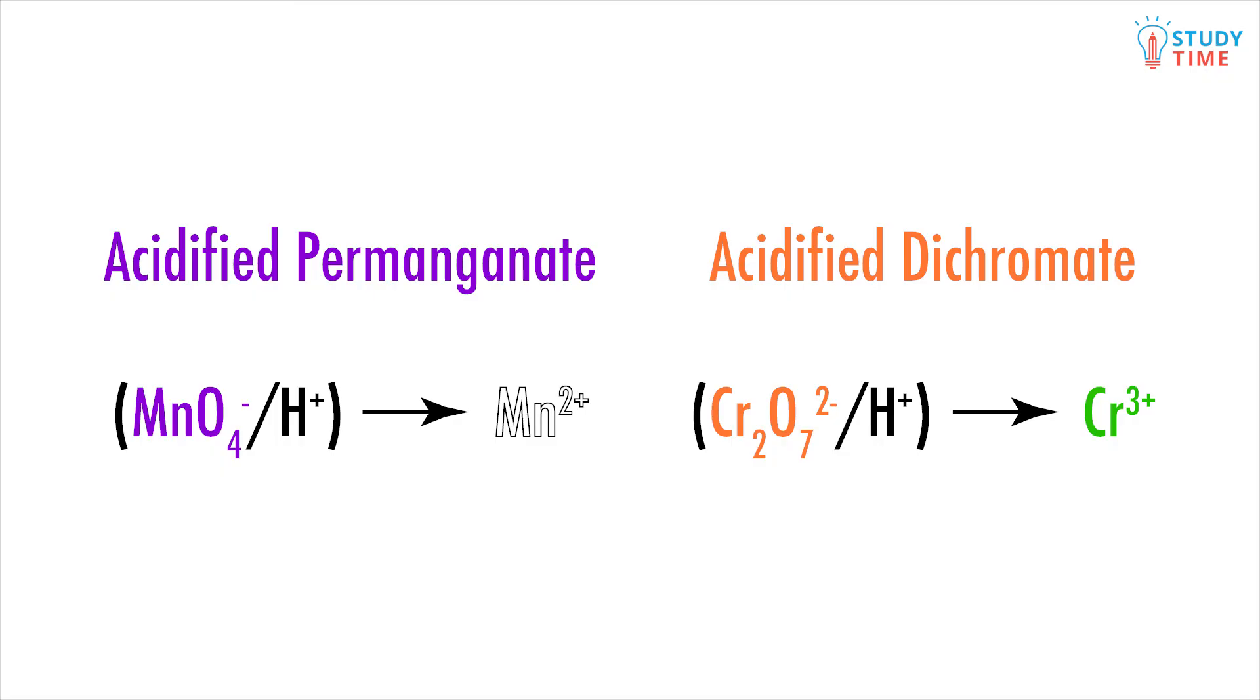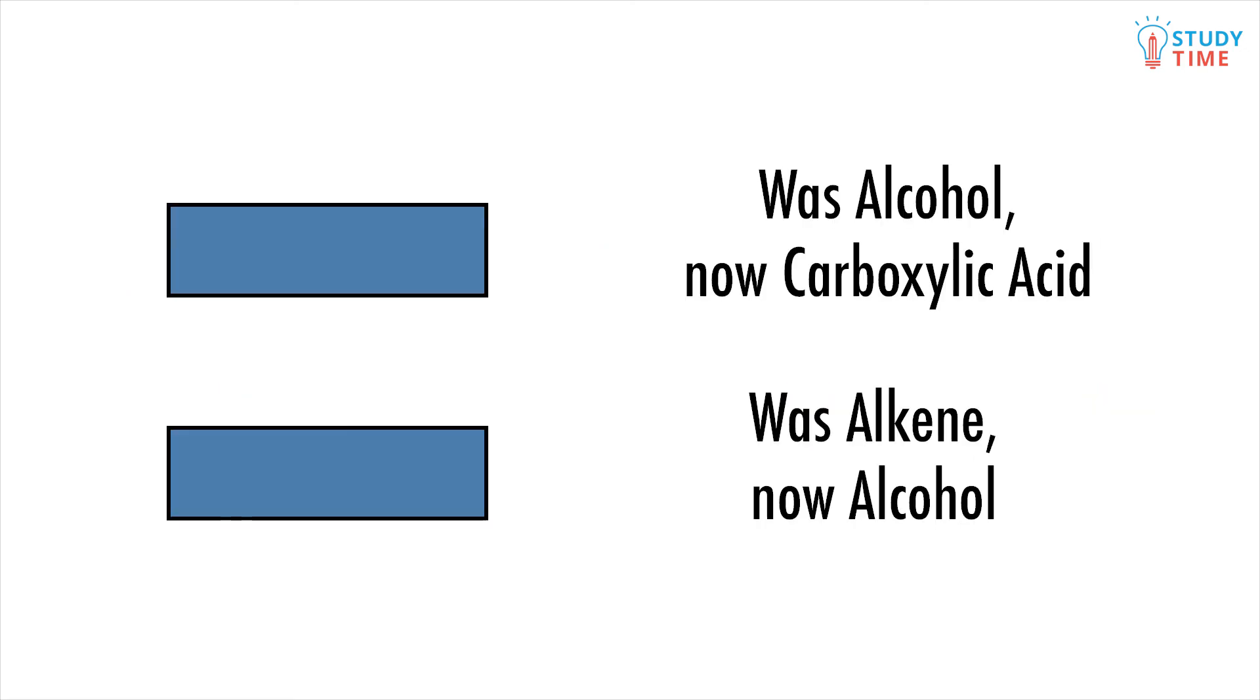So the first thing you'll notice if your unknown substance is oxidized is this color change. But you still might not know if you've oxidized an alcohol to a carboxylic acid, or if you've oxidized an alkene to an alcohol. So to find out, simply use blue litmus paper. And if it turns red, you had an alcohol before, which is now a carboxylic acid. If it doesn't change color, you had an alkene before, which is now an alcohol. Voila.